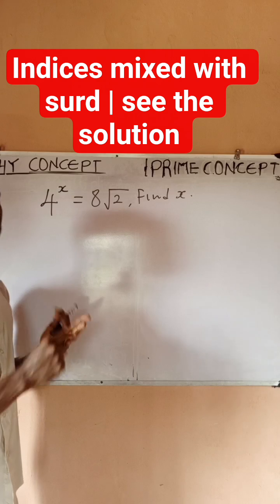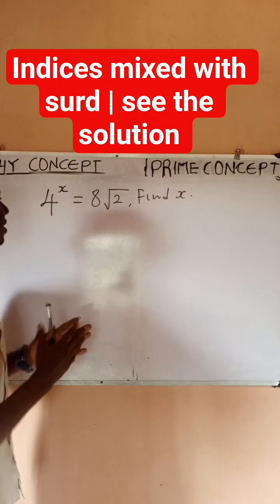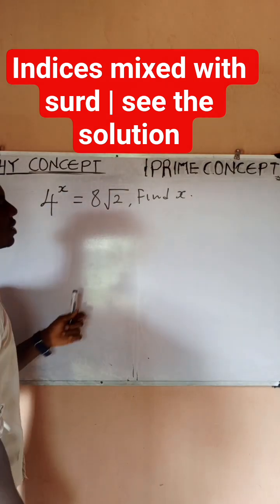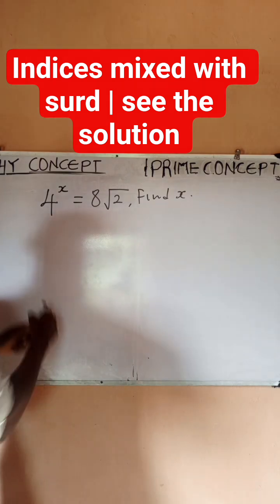Try to see if you can get a common base or you look for a common power. One of these two must be possible for every indices. So quickly seeing four, I already know that I can establish all these things as a base of two.